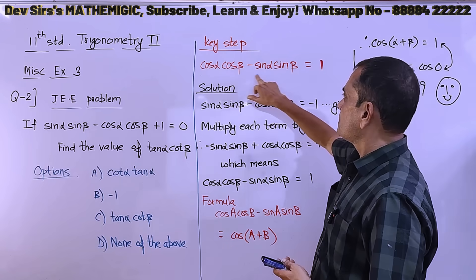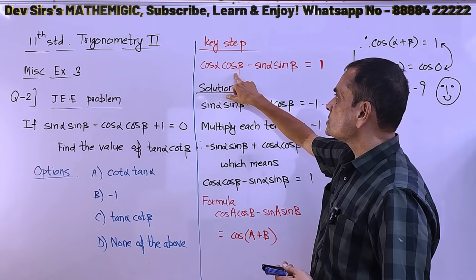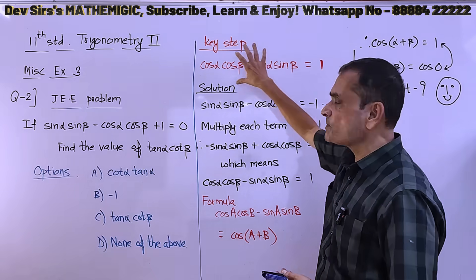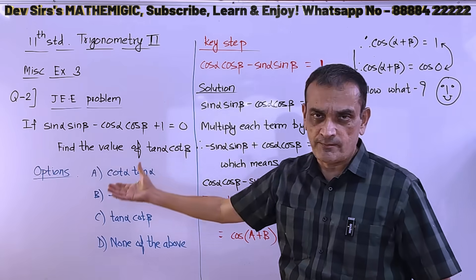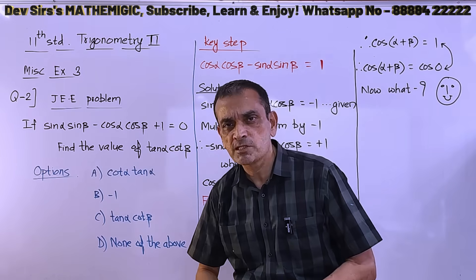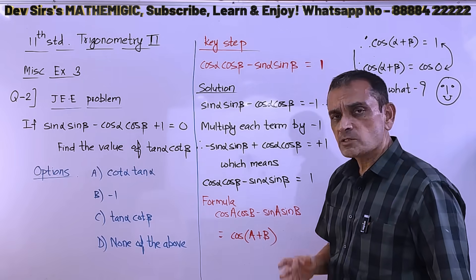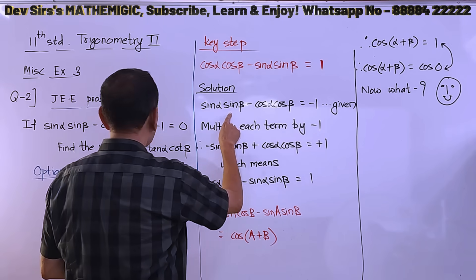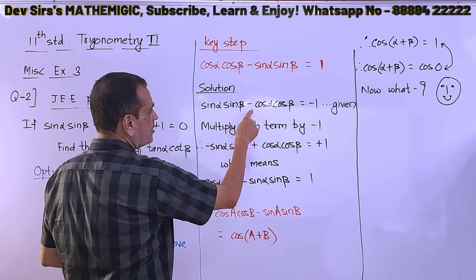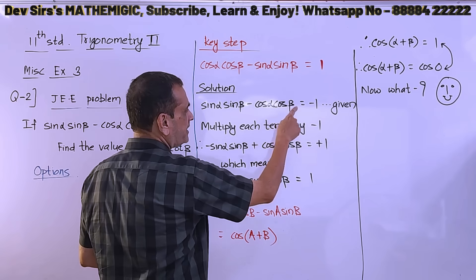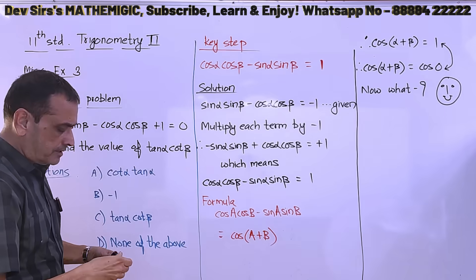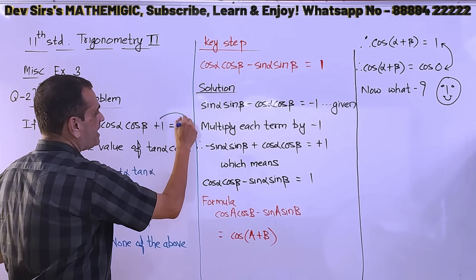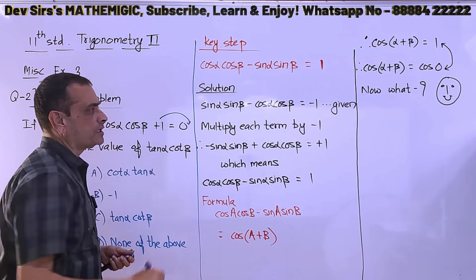So first, we note that cos α cos β minus sin α sin β equal to 1 — we need to convert to this form. From the given equation: sin α sin β minus cos α cos β equal to minus 1 — I have taken the 1 to the right hand side, so it becomes minus 1 over there.